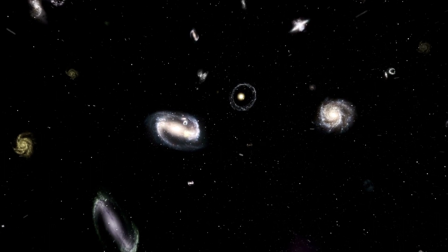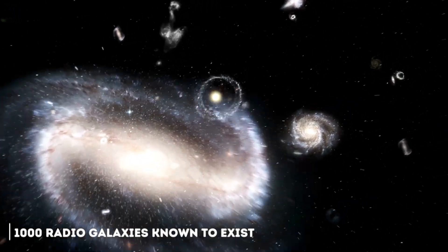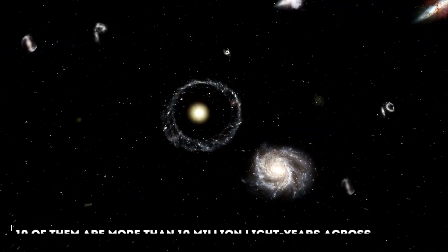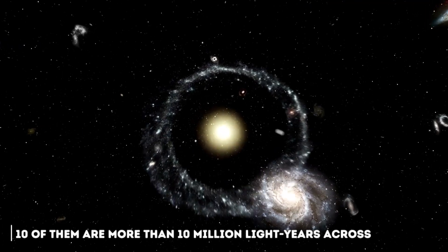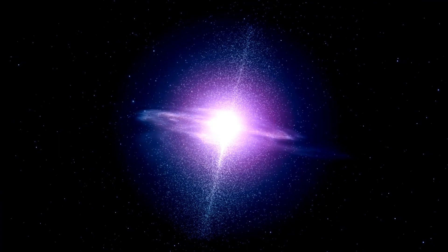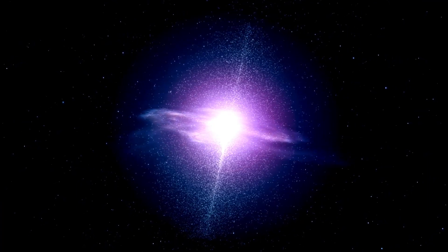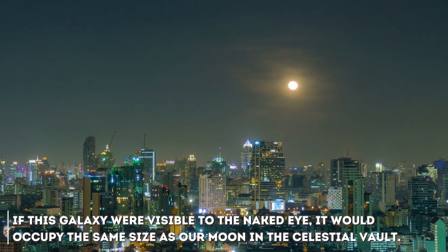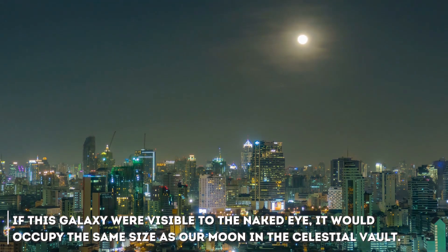To date, there are approximately 1,000 radio galaxies known to exist, of which only 10 of them are more than 10 million light years across. With its size and being located 3.5 billion light years away, if this galaxy were visible to the naked eye, it would occupy the same space as our moon in the celestial vault.